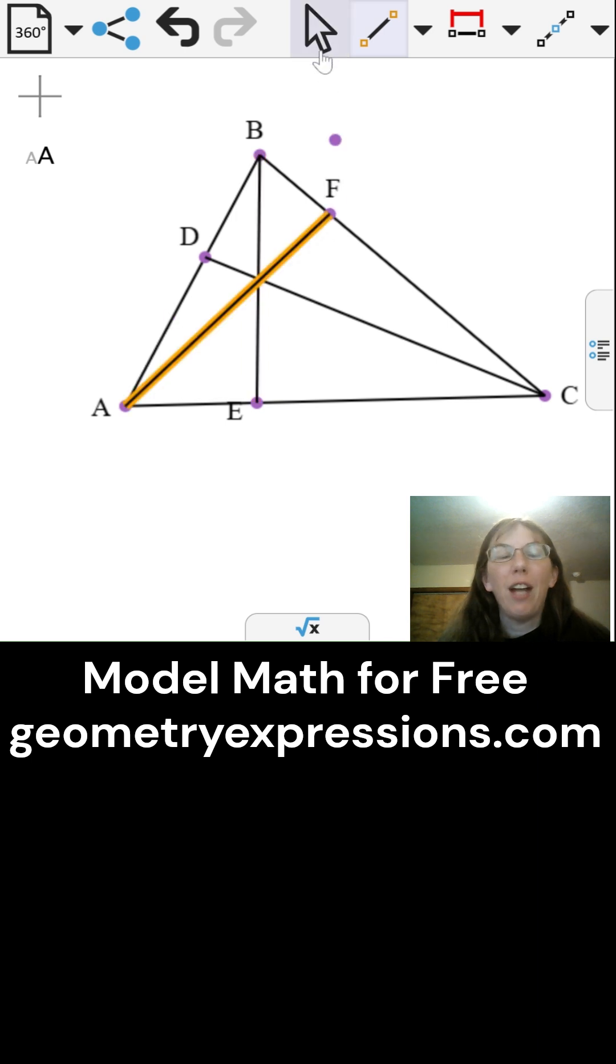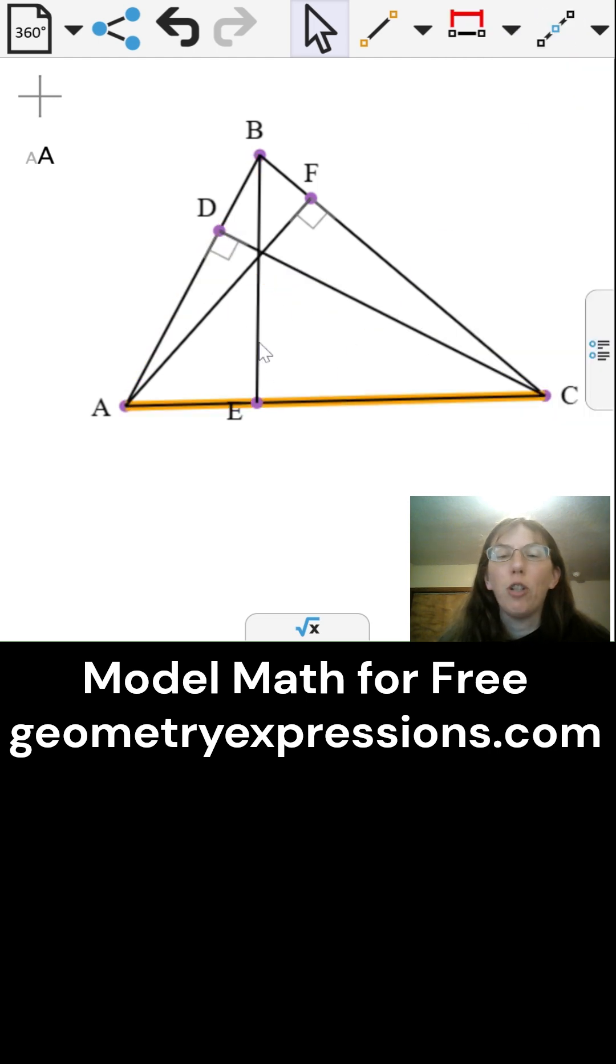I will draw a triangle and find the altitude of each side. Then I will connect the three feet of the altitudes to form a second, smaller triangle.